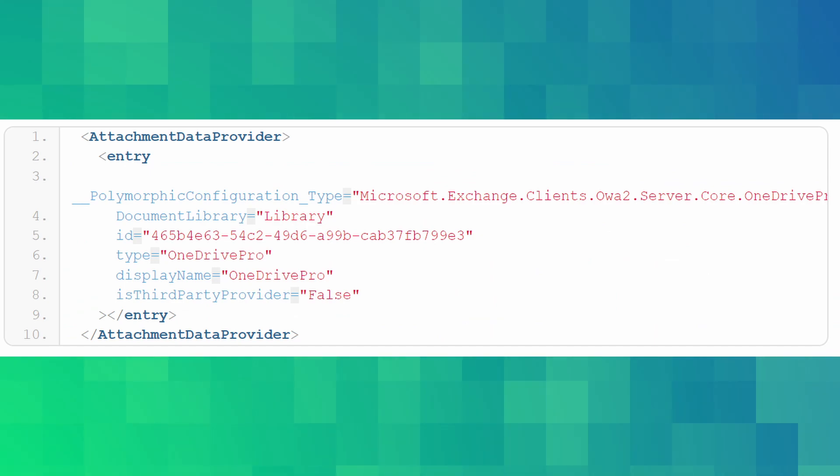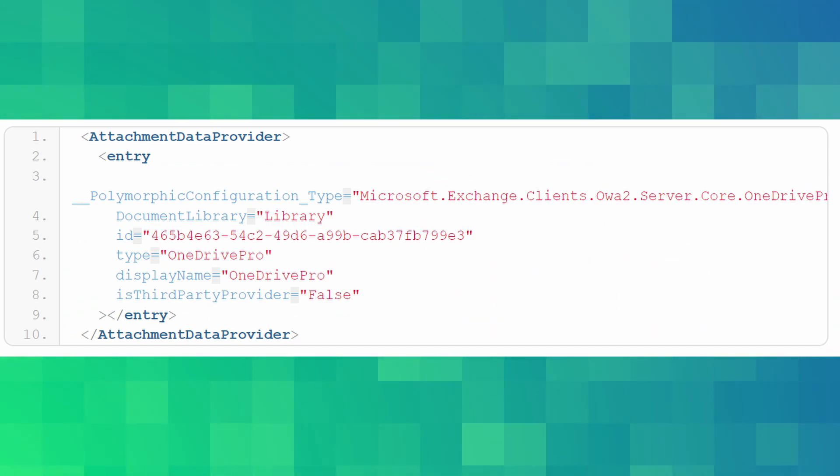An attacker can simply do this by sending this XML. Since this method will send a request to a server and parse the response as XML, the attacker can set up a server that returns malicious XML, allowing them to read arbitrary files on the file system using a low-privileged user. You can set this configuration via this XML even if you are not a high-privileged user — just a regular low-privileged user of a company.